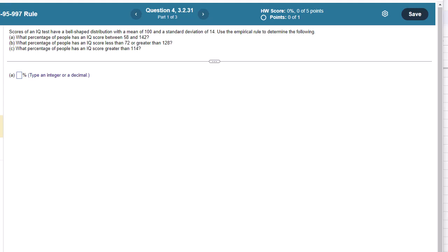Scores of an IQ test have a bell-shaped distribution with a mean of 100 and a standard deviation of 14. Use the empirical rule, which I call the 68-95-99.7 rule, to determine the following. What percentage of people have an IQ score between 58 and 142? And then we have two other parts, very similar.